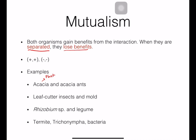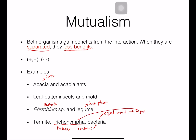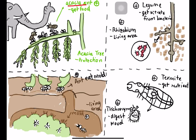Other mutualism examples include Rhizobium bacteria in the root nodules of legume or bean plants, and the termite and Trichonympha — a protozoan living inside the termite's body. Inside Trichonympha there is bacteria that can digest wood and turn it into sugar. This sugar becomes food for Trichonympha and also for the termite. Three organisms live together.